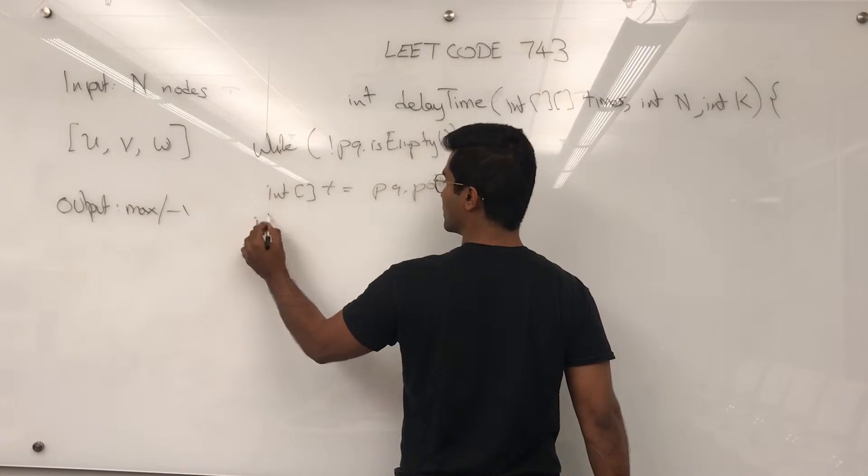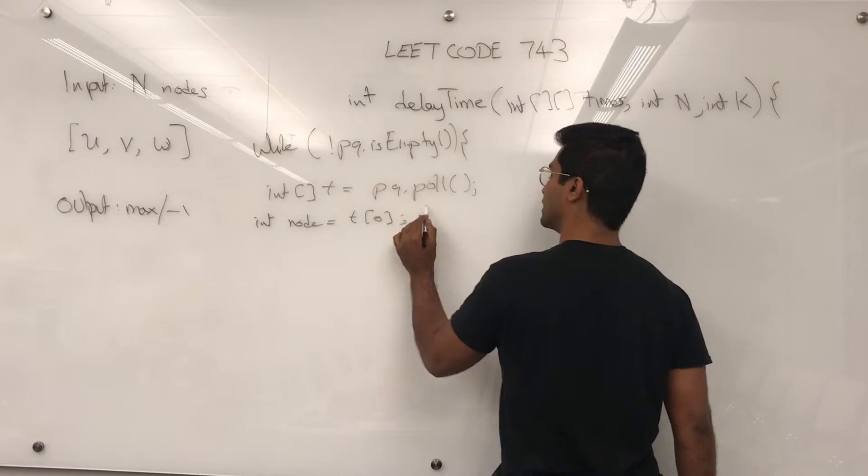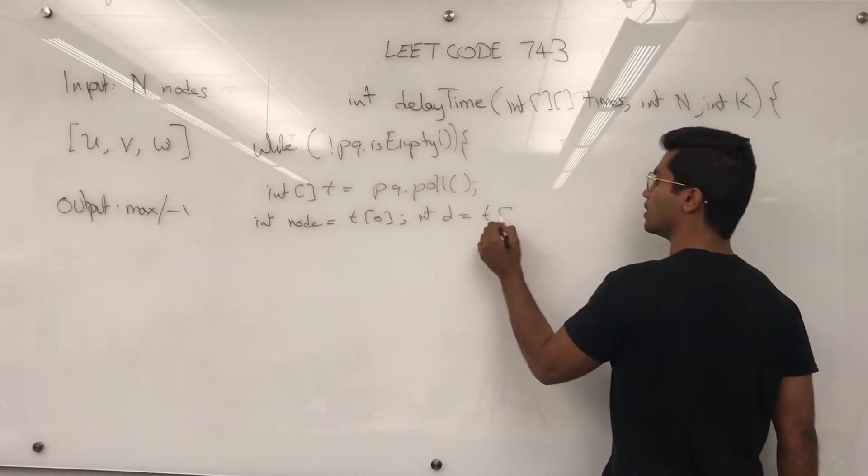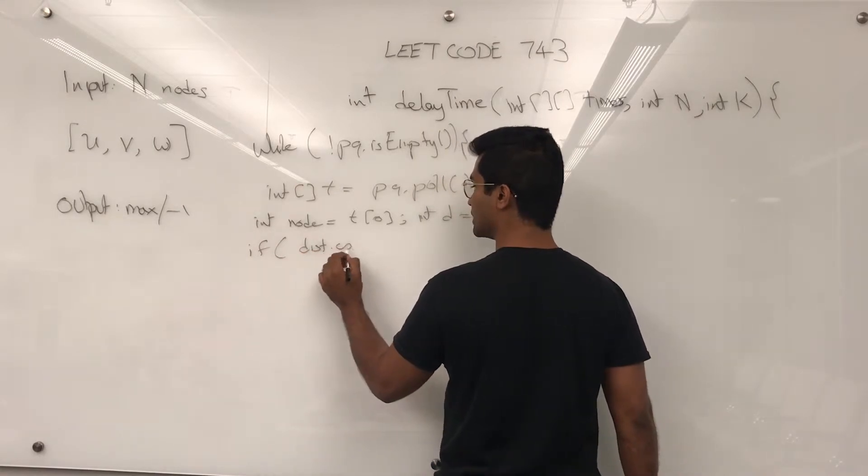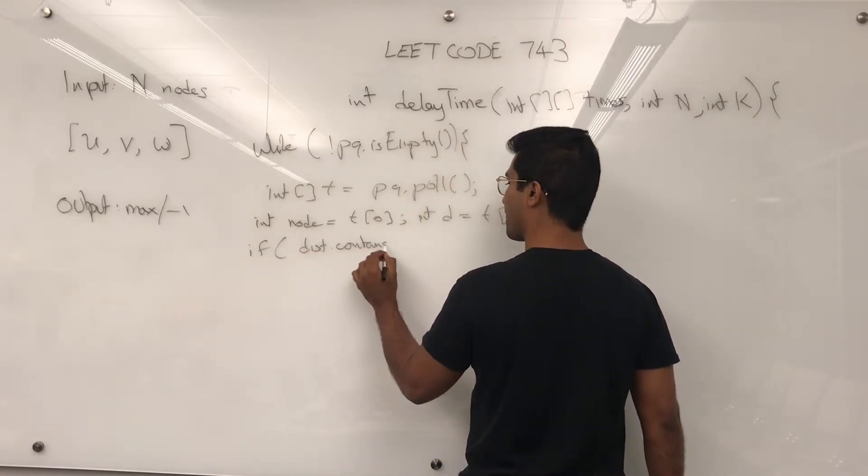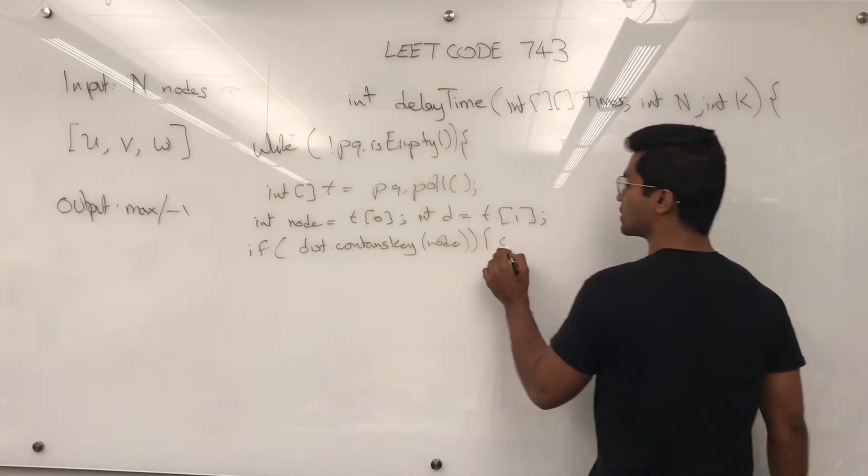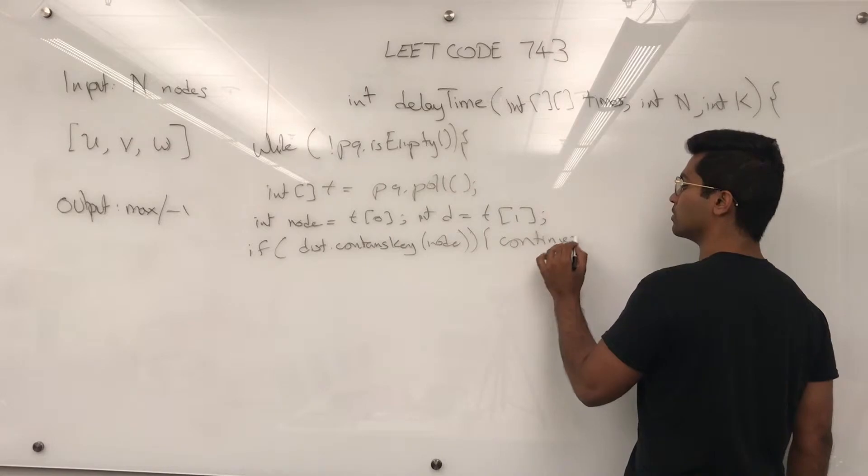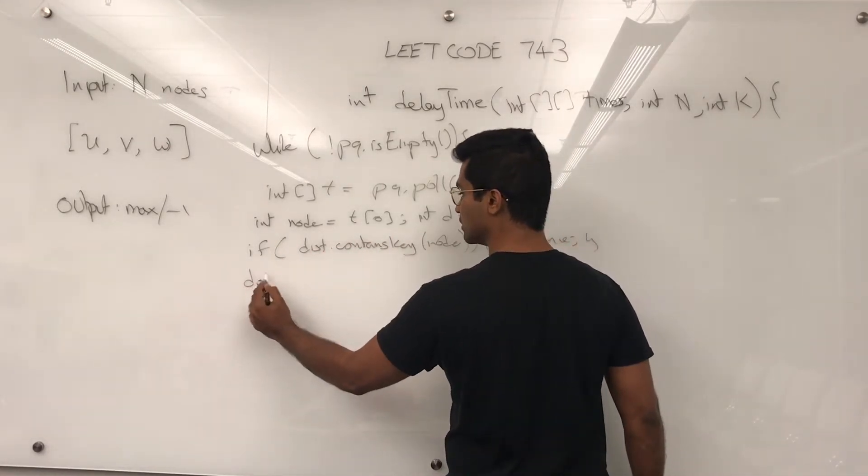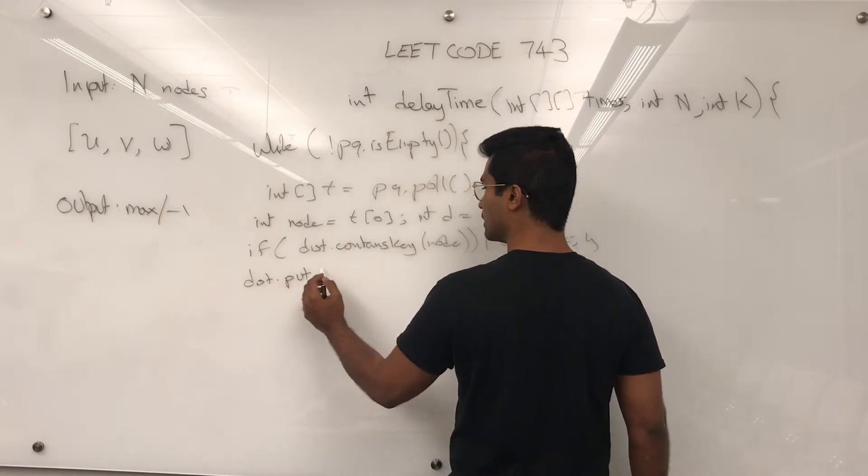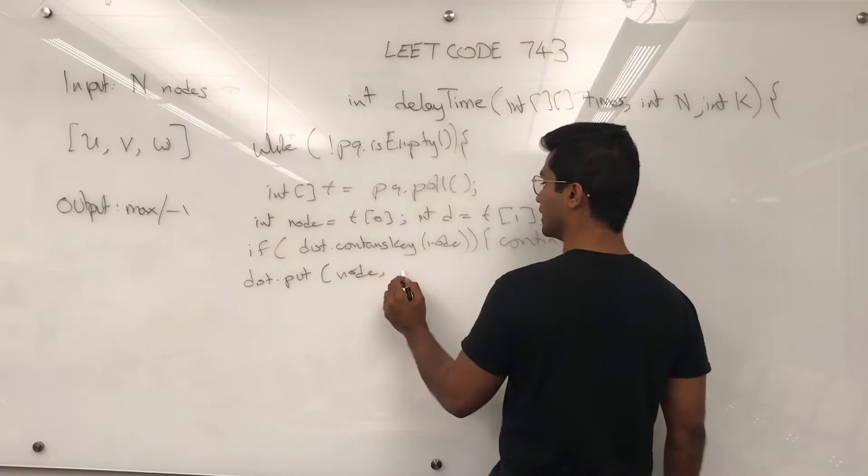And let's get the node. int node is going to be t of 0. And int d is going to be t of 1. Alright. If the distance contains it, distance map contains key, if we've already visited this node, we can just continue. We don't have to consider this node again. We shouldn't. Else, we're just going to do distance.put node and d.